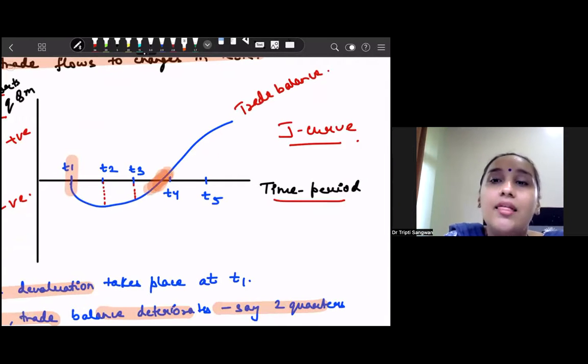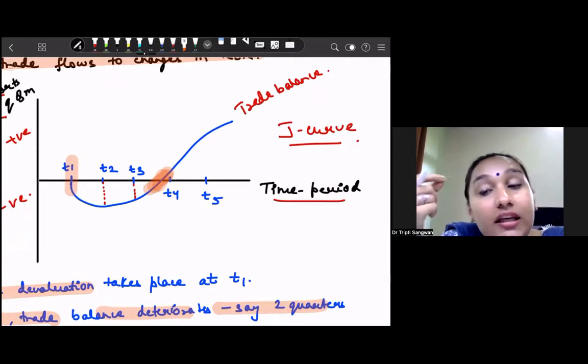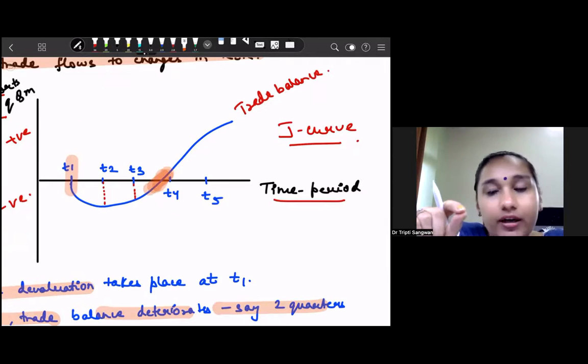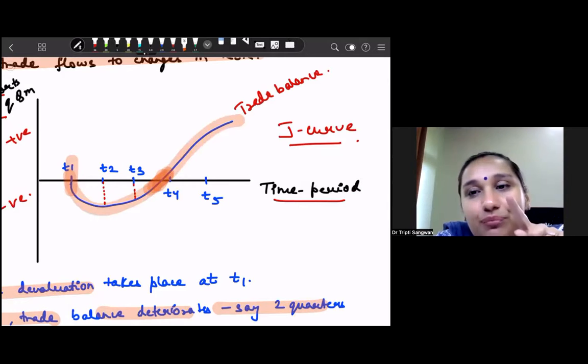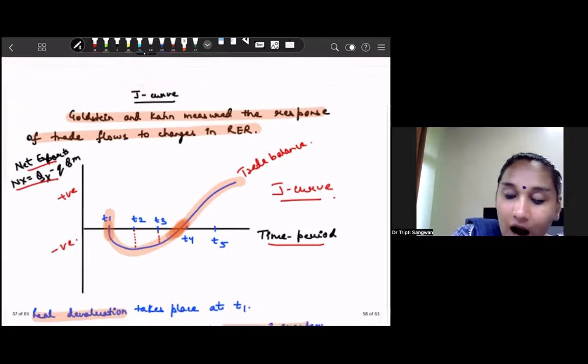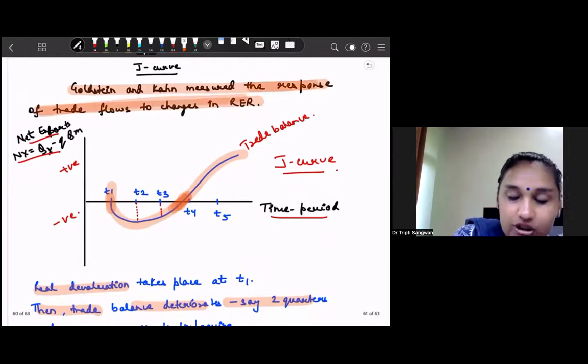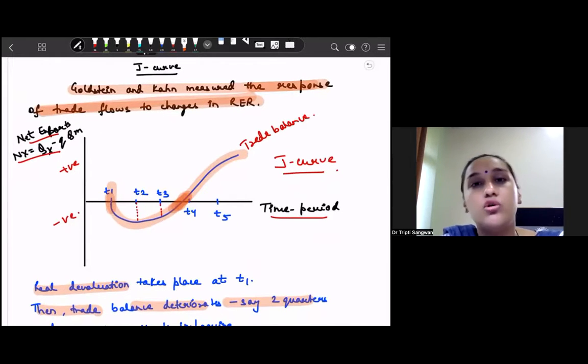That is why we say that when there is devaluation under fixed exchange rate or depreciation under flexible exchange rate, then the trade balance will improve, but the improvement in the trade balance will take time because there are adjustment lags. And this is how this shape, J-curve, this shape of improvement of trade balance is termed as J-curve, which shows that how the trade balance changes with the changes in the real exchange rate. So with this, your J-curve part is complete.